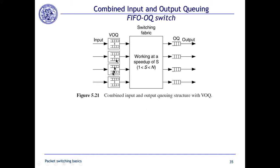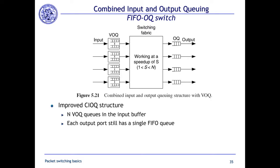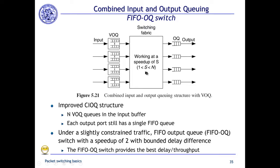A more sophisticated solution combines input and output buffers using virtual output queues at the input. With n virtual output queues in the input buffer plus some output buffer capacity, and a speed-up factor between 1 and n, it has been proven that a speed-up factor of just 2 — meaning output buffers capable of holding two packets — achieves 100% throughput in almost all traffic conditions. This is a cost-effective and interesting solution.